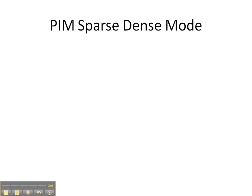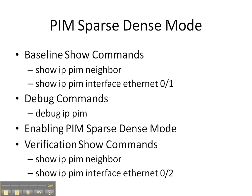In this video cheat sheet, we're going to be configuring PIM sparse dense mode on our network. We're going to start off with the baseline show commands of show IP PIM neighbor and interface to see if PIM has already been configured. Then we're going to enable the debug IP PIM command so we can see how things unfold when we enable PIM sparse dense mode, and finish up with the verification show commands to see how things have changed.